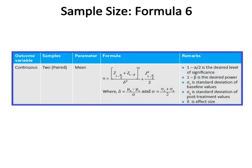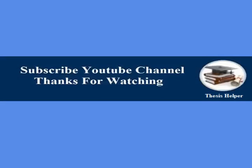Sample size formula six: the outcome variable is continuous, the samples are two which are paired, and the parameter is mean. The formula is given in the above table, where (1 - α/2) is the desired level of significance, (1 - β) is the desired power, σ1 is the standard deviation of baseline values, σ2 is the standard deviation of post-treatment values, and delta is the effect size.